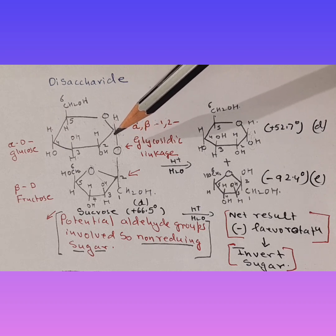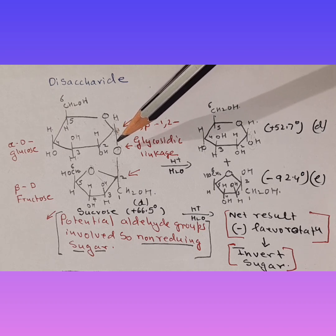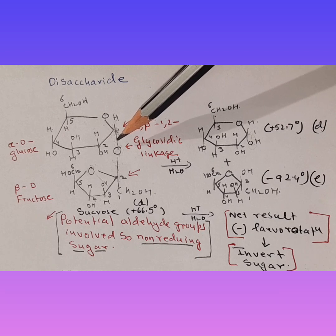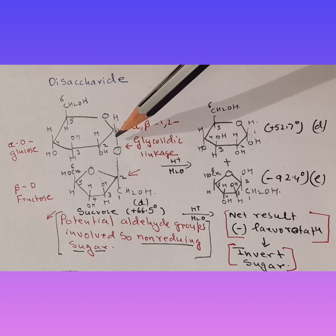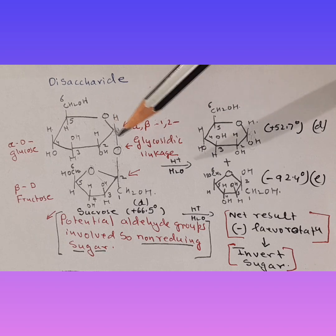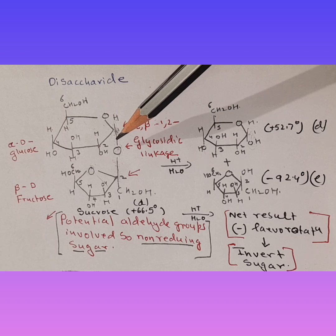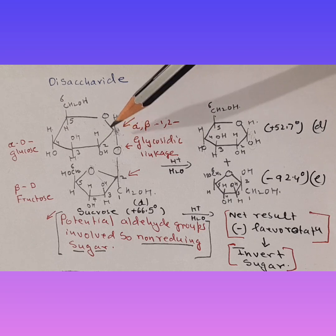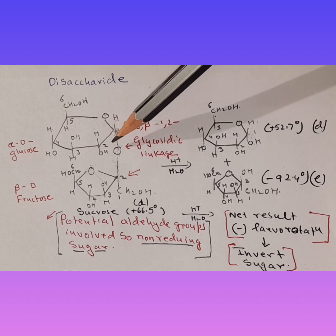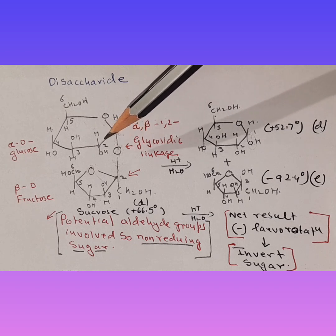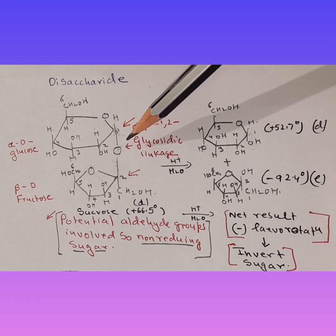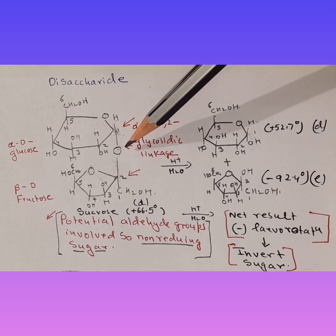Since that OH has been involved, as a result it loses its capacity to reduce the counterpart. Aldehyde has the property of reducing, so it can act as a reducing agent. When it acts as a reducing agent it itself gets converted into carboxylate and reduces the counterpart. When we talk about reducing sugar, this sugar should have the capacity to get oxidized itself and reduce the counterpart — then we call it a reducing sugar.